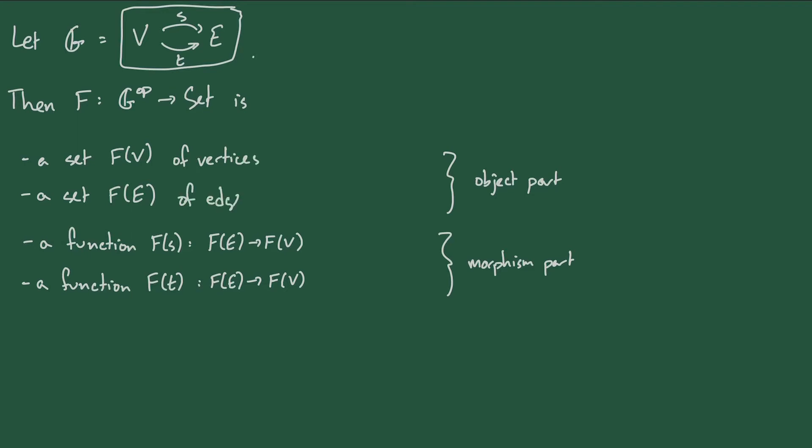And at this point, maybe my notation has tipped you off that the data of F is the same as the data of a graph, or maybe more precisely, a directed multigraph. We can regard F(V) as the set of vertices, F(E) as the set of edges, and then F(S) and F(T) are the projections that give us the source and the target vertex of every edge.